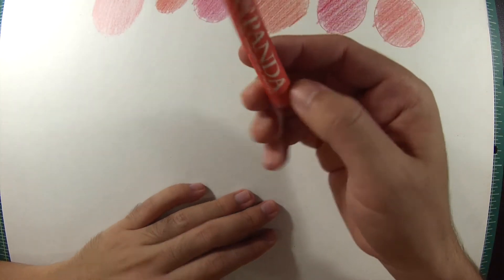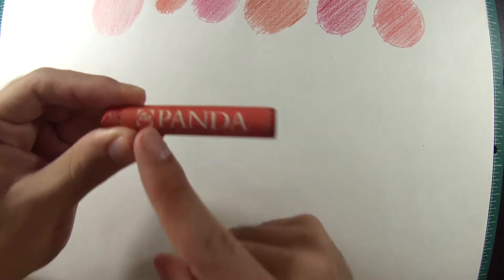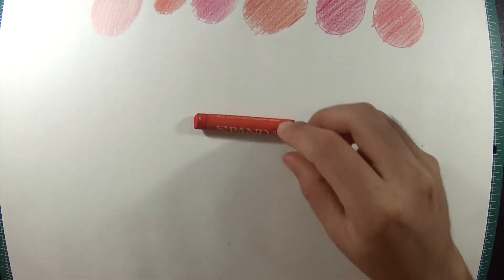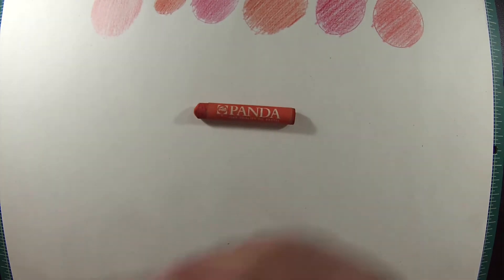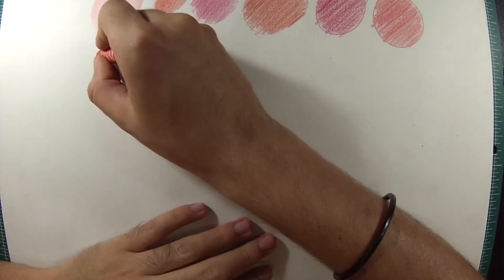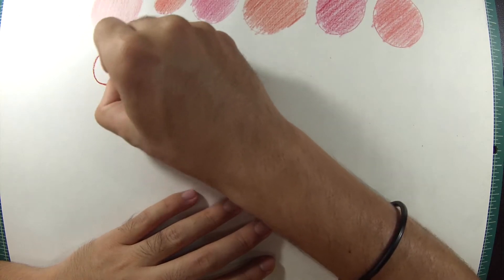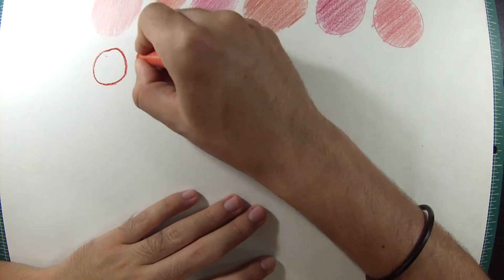So now we're gonna use the Panda Oil Pastel. And I'm gonna use them to blend the normal pencils in. So I'm gonna make a few circles and then color it in. I'm gonna speed it up for you guys.